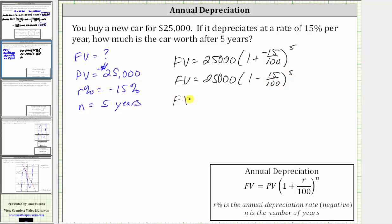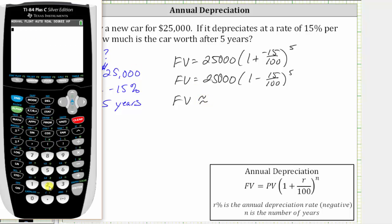And now we will go to the calculator to get a decimal approximation for the future value. We enter 25,000, open parenthesis, and then one minus 15 divided by 100, close parenthesis, raised to the power of five, enter.